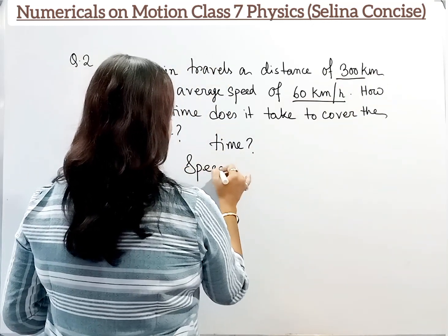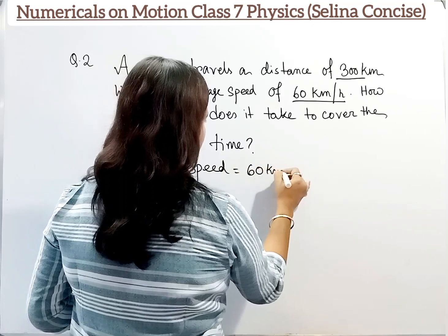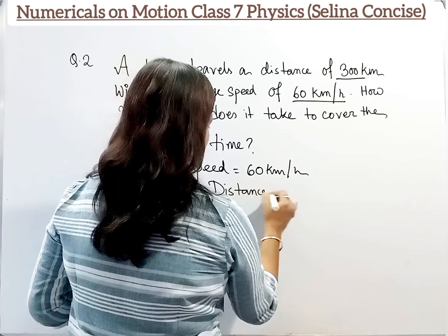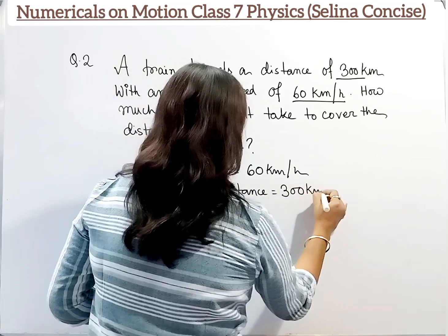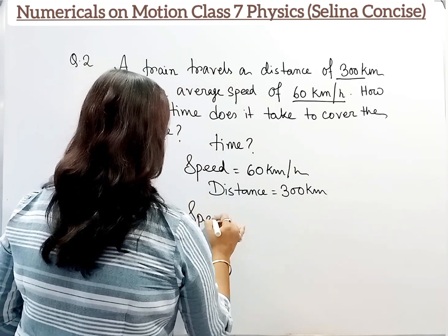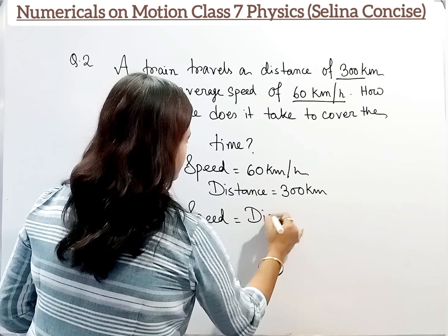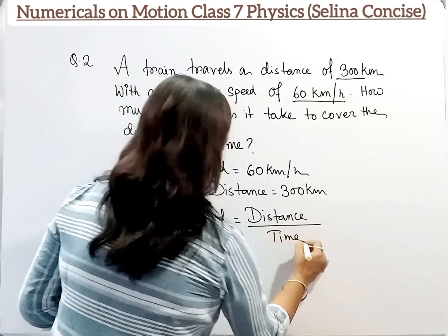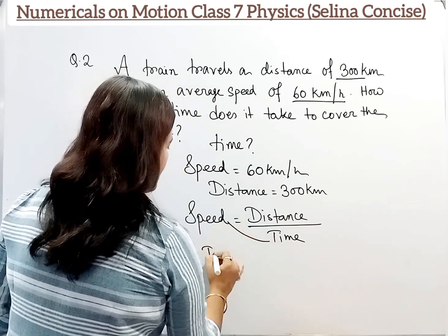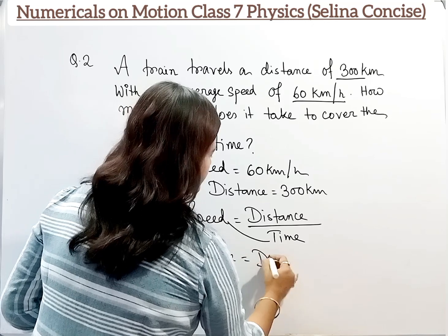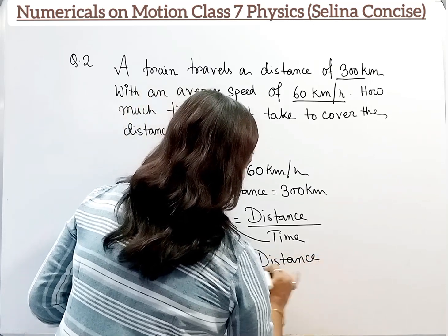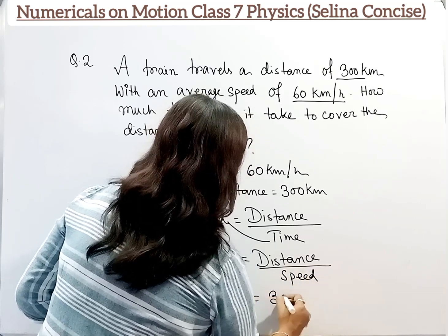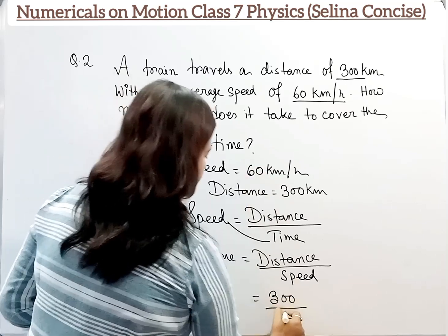Speed equals 60 km per hour and distance equals 300 km. Now we know that speed equals distance by time. Therefore, we can write time equals distance by speed. Distance is 300 km and speed is 60 km.